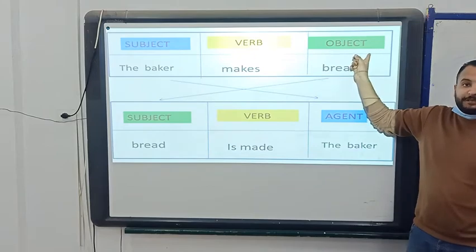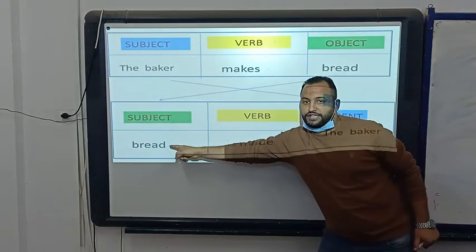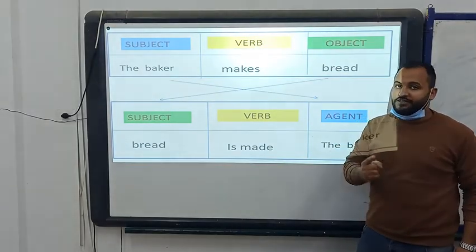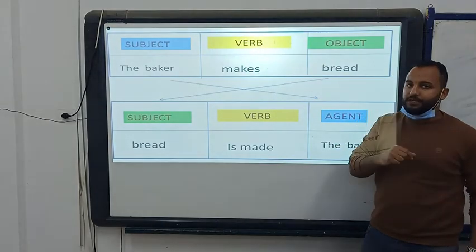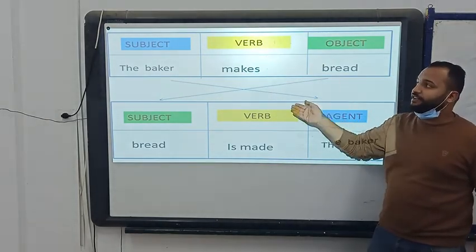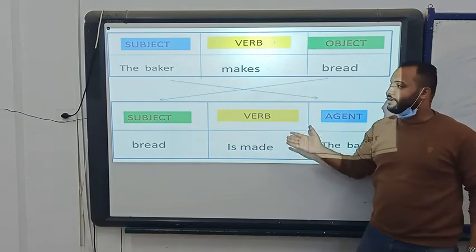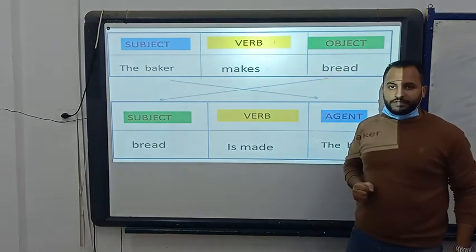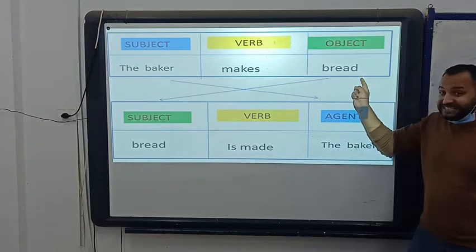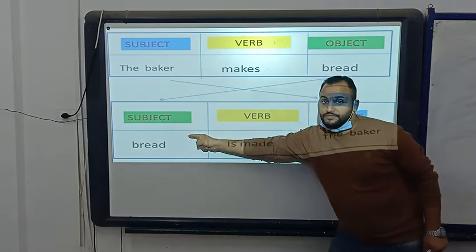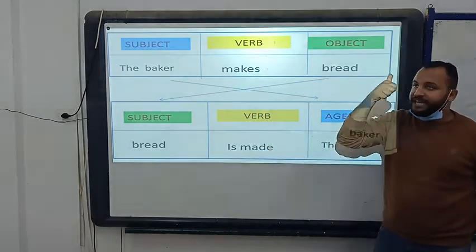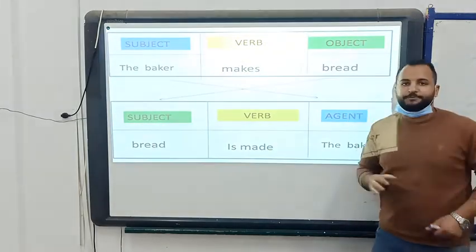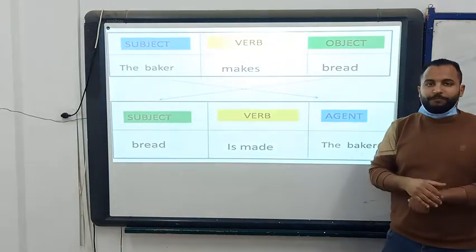To make it passive, I start with the object first — bread. After that, verb to be. After that, past participle. So what is the difference between active and passive? Active: subject plus verb plus object. But in the passive, object comes first, then verb to be (is/are in the present), then past participle.